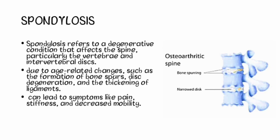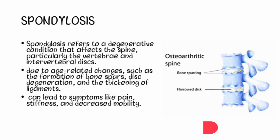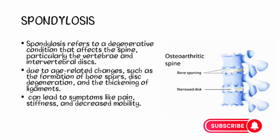Let's discuss each term one by one. First, we have spondylosis. Spondylosis refers to a degenerative condition that affects the spine, particularly the vertebrae and the intervertebral discs. It involves the wear and tear of the spinal structures due to age-related changes, such as the formation of bone spurs, disc degeneration, and thickening of the ligaments.